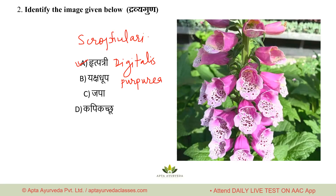Rutpattri is also called Digitalis in English (Digitalis purpurea). Its paryaya (synonym) given is Tilya Pushpi. It is called Rutpattri because its leaves (patra) are used in Hriday (cardiac) rogas. So the right answer is option A.